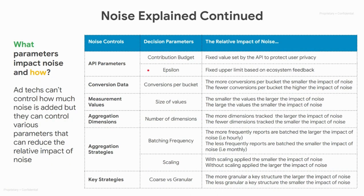Epsilon ranges from zero to 64. During origin trial, this is a parameter that ad tech should experiment with. We are looking for ecosystem feedback on this value, and we plan to set an upper limit on this parameter that satisfies the ecosystem's use cases.